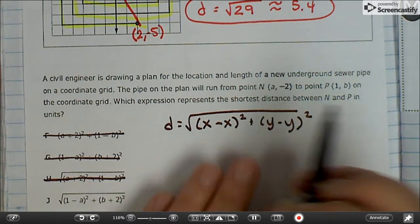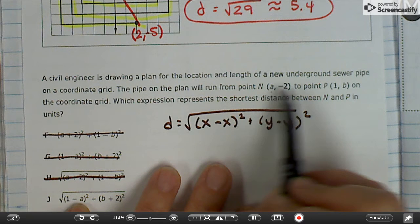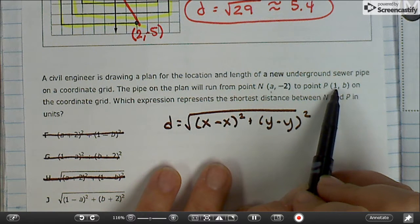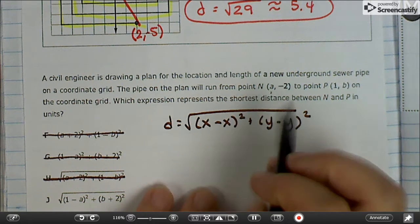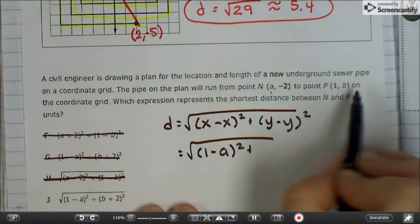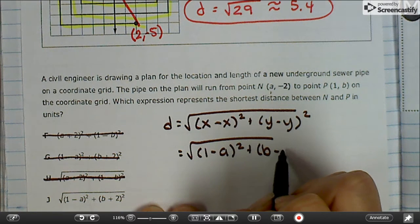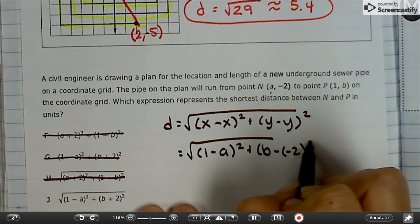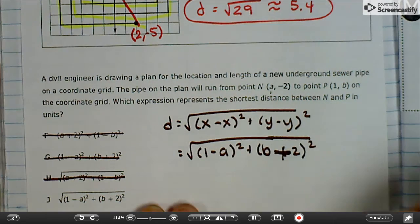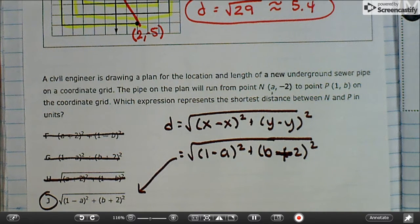The last one, it says 1 minus A, and we've been going like A minus 1, but you can go the other way. 1 minus A would be X. And then B minus negative 2. And minus a negative is positive. So choice J is the right answer, which you could do by reasoning or by actually doing the distance formula. Either way works.